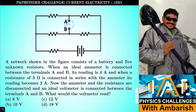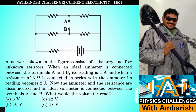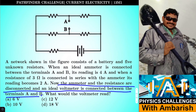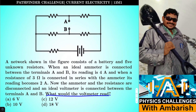When a resistance of 3 ohm is connected in series with the ammeter, its reading becomes 2 Ampere — so earlier it was 4 Ampere and then after the resistor is connected in series the reading becomes 2 Ampere. Now the ammeter and resistance are disconnected and an ideal voltmeter is connected between terminals A and B. What would be the voltmeter reading? That's what we have to find out. You can give it a try — I'll get into my solution right away.